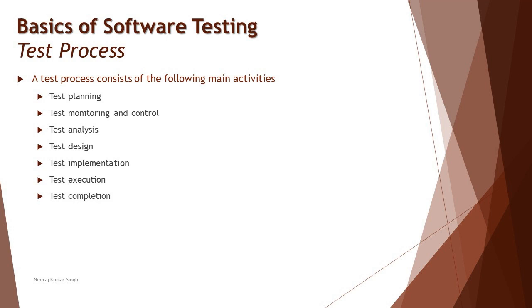Generally, a test process comprises seven standard phases: test planning, test monitoring and control, test analysis, test design, test implementation, test execution, and test completion. Test planning and monitoring and control are set up at one stage, but monitoring and control is an ongoing activity throughout the project. We'll be explaining each phase in detail — the set of activities organized within it and who in the organization is responsible for performing those activities.